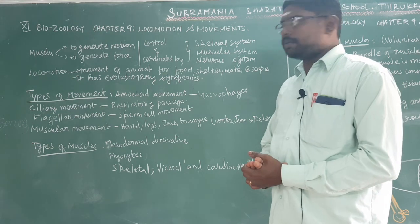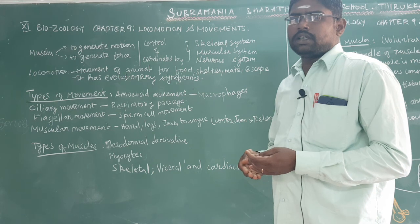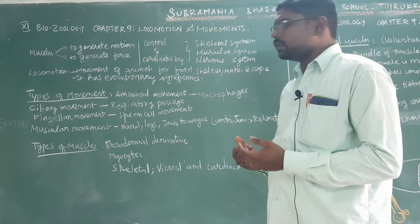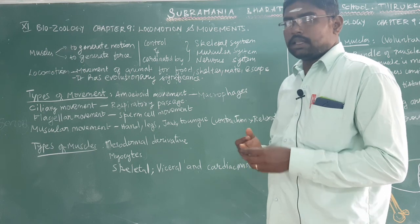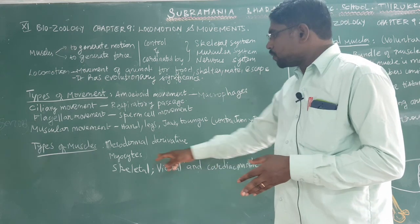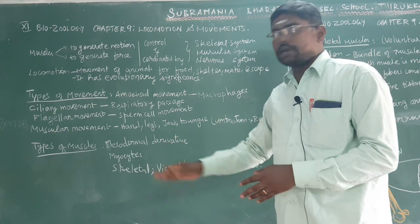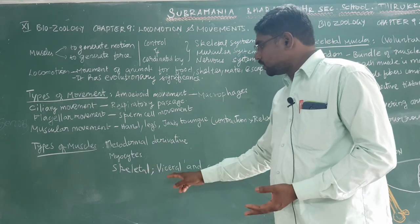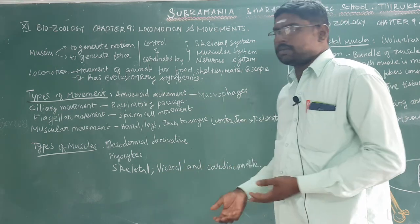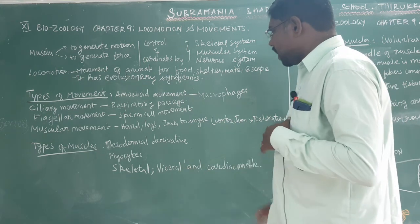The muscle is a mesodermal derivative. In embryo development, the muscle comes from the mesoderm. The types of muscles are skeletal muscles, visceral muscles, and cardiac muscles.